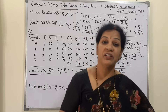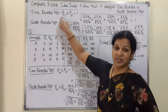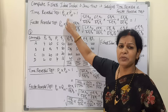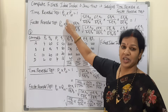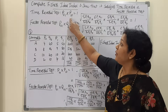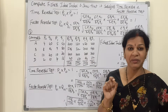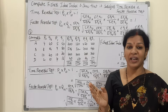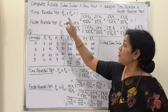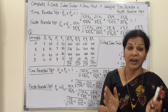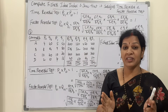Before going to the problem, let me explain what is time reversal and what is factor reversal test. The time reversal test formula is: P01 (Fischer's ideal index number) multiplied by P10 (its reverse) should be equal to 1. This should equal 1 — then only we can say that Fischer's ideal index number is satisfying the time reversal test.